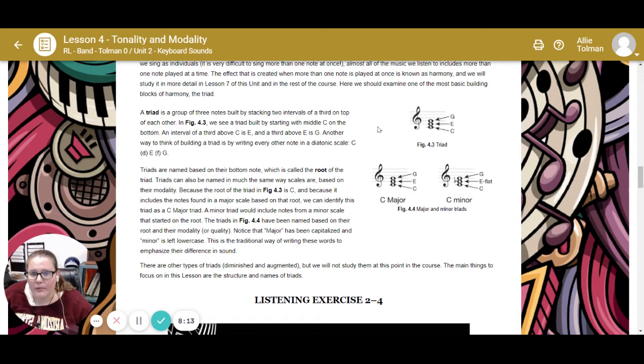Triads are named based on the bottom note, which is called the root of the triad. This is in the key of C. Triads can also be named based on their modality. Because the root is C, and it includes all the notes found in the major scale based on the root, we can identify this triad as a C major triad. A minor triad would include notes from a minor scale that started on the root. The triads in Figure 4.4 have been named based on their root and modality. Notice that major is capitalized and minor is lowercase. This is the traditional way of writing these words.